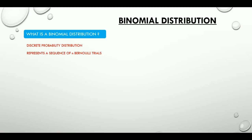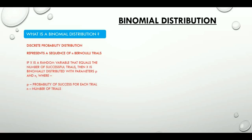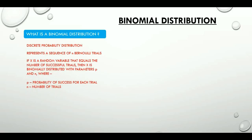If x is a random variable that equals the number of successful trials, then x is binomially distributed with parameters p (as in Peter) and n (as in November), where p is the probability of success for each trial and n is the number of trials.